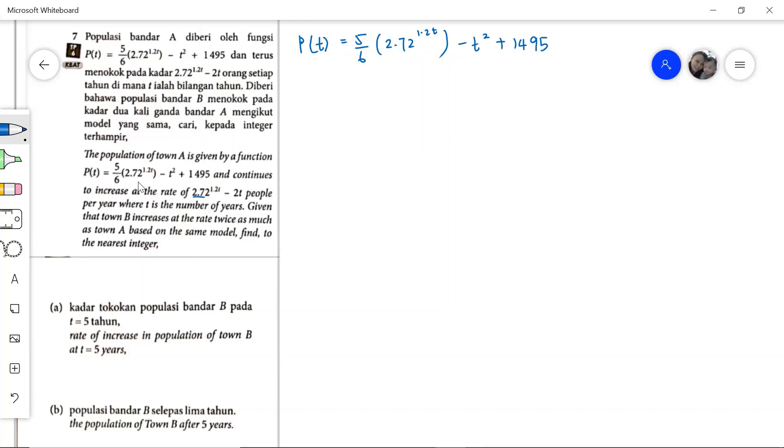The given expression doesn't give us any symbol, but by the word 'the rate of', basically we are differentiating P with respect to T. So we can write P'(T) equals 2.72^(1.2T) minus 2T.